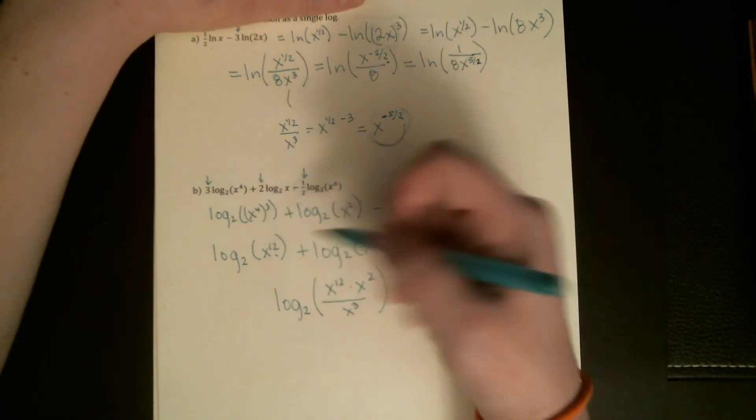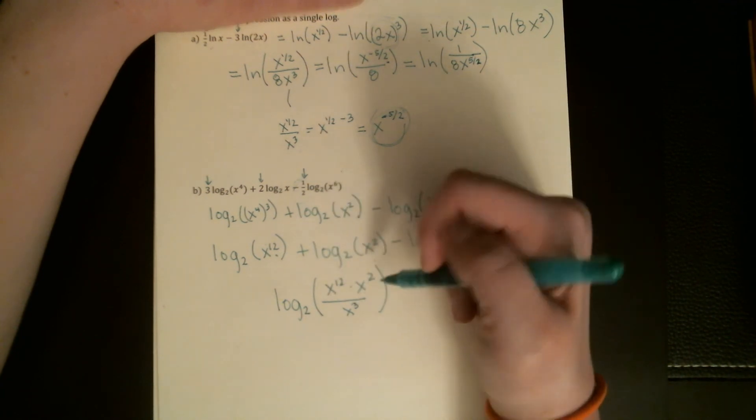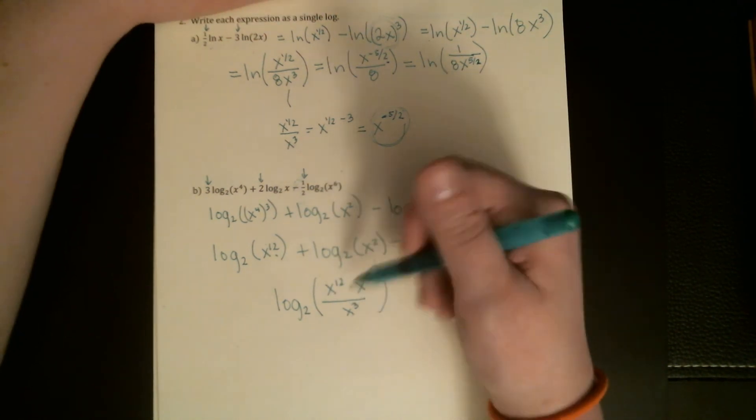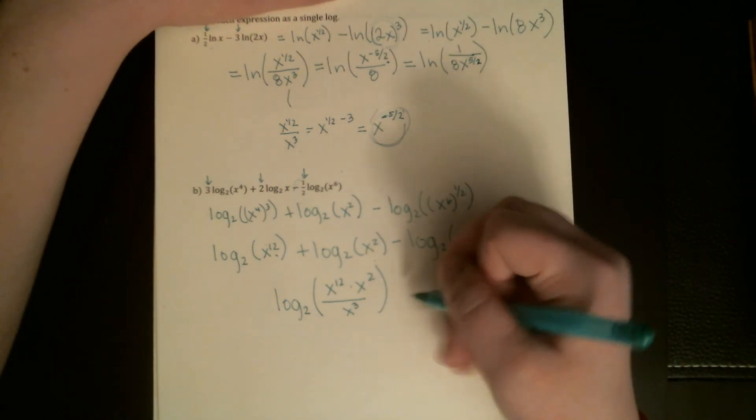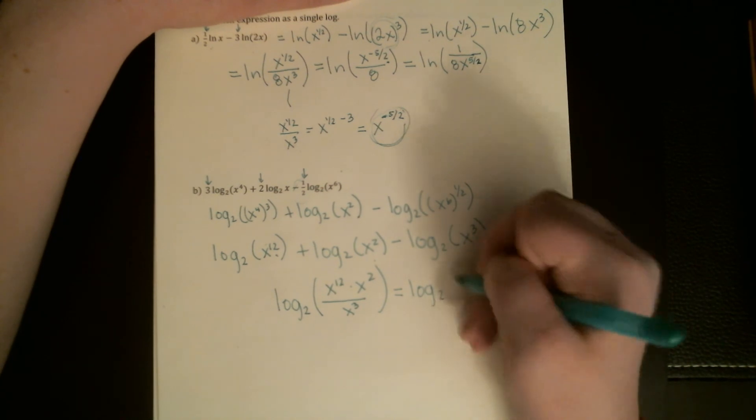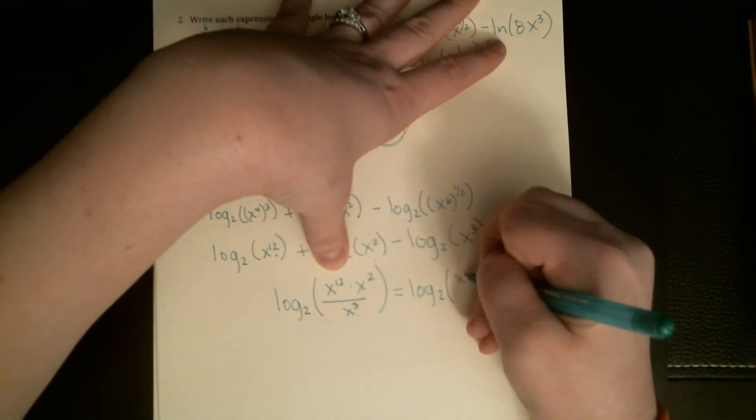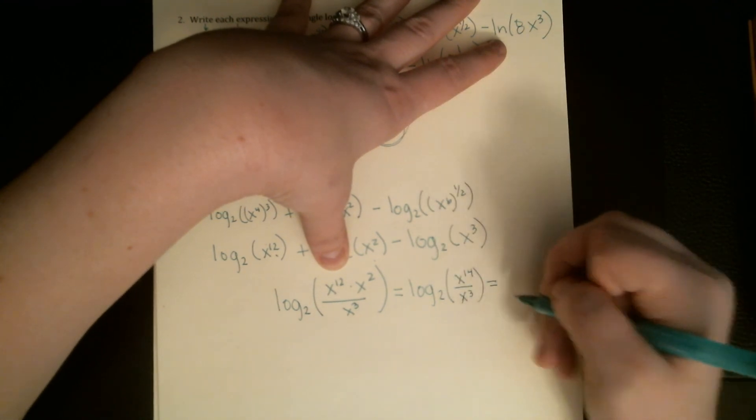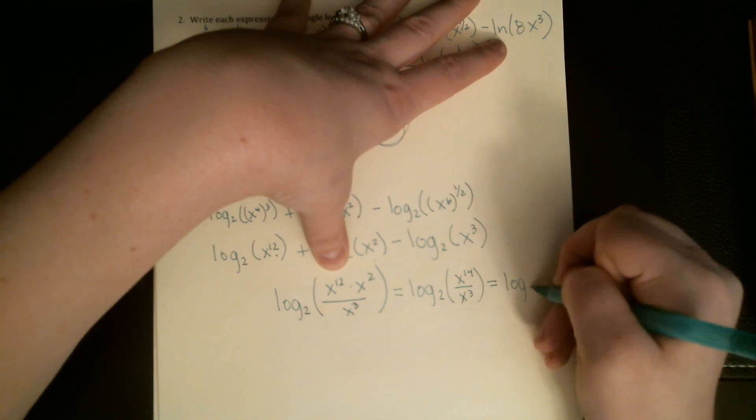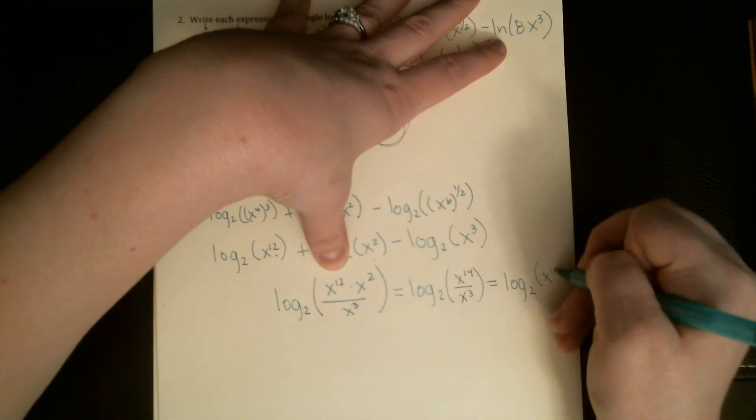This is going to turn into—you can do this all in one step if you're comfortable—but I see an x to the 14 on top. If I cancel out three x's from that since there are three in the bottom, I'm going to get a log base 2 of x to the 11.